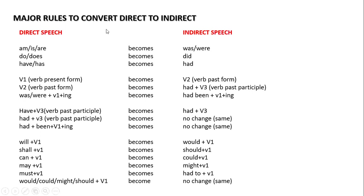Some major rules to convert direct speech into indirect speech. Generally in reported speech, 'am', 'is', 'are' change into 'was', 'were' because present continuous becomes past continuous. 'Do', 'does' in reported speech — that means simple present tense — 'do'/'does' becomes 'did'. 'Have'/'has' becomes 'had'. 'Have'/'has' generally comes in present perfect, so it automatically becomes past perfect. For example, 'I have a car' becomes 'had a car.'